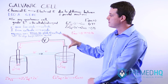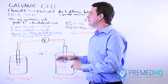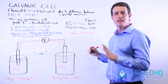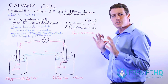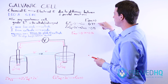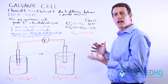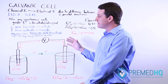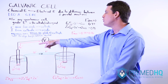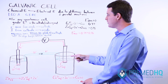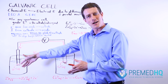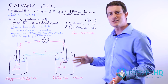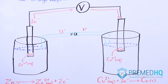For any spontaneous cell, the reaction with the greater or more positive standard reduction potential will be the cathode. That's always true. Electrons move from the anode to the cathode, and current moves in the opposite direction, because current represents positive movement while electrons are negative.